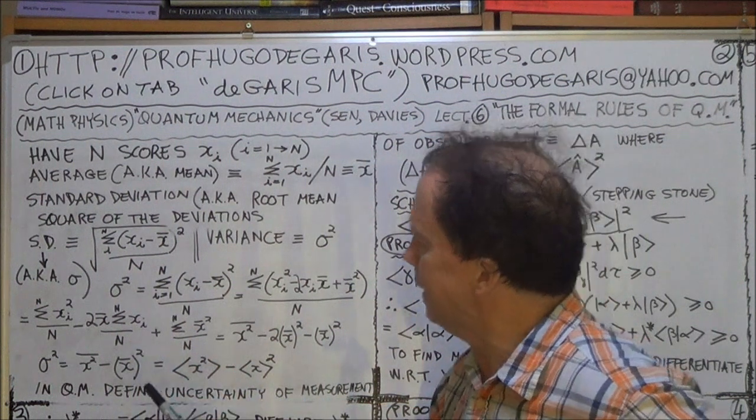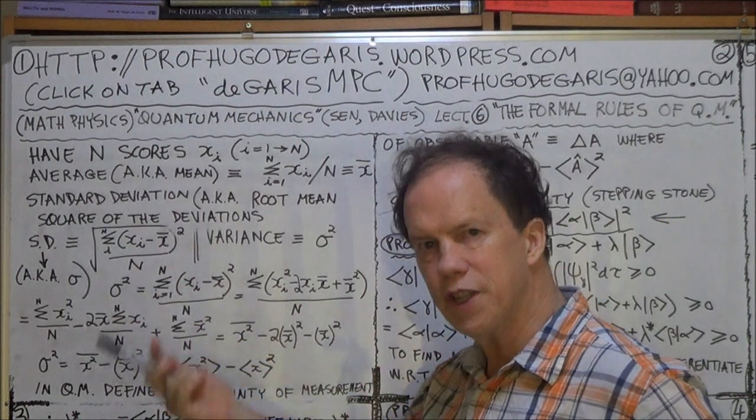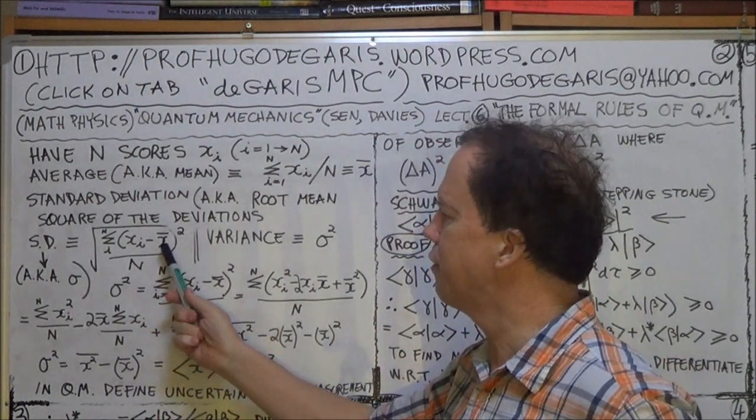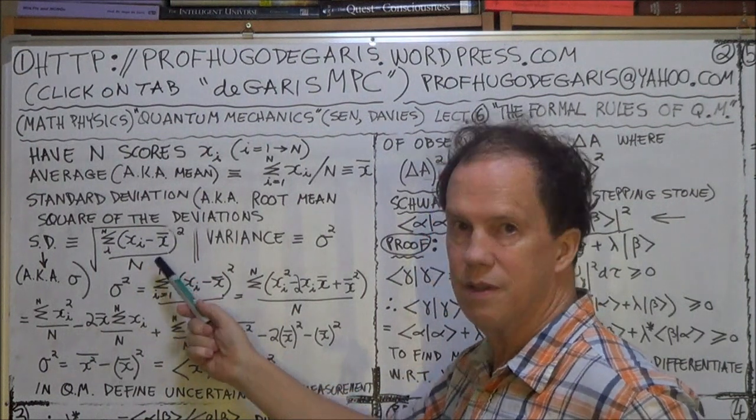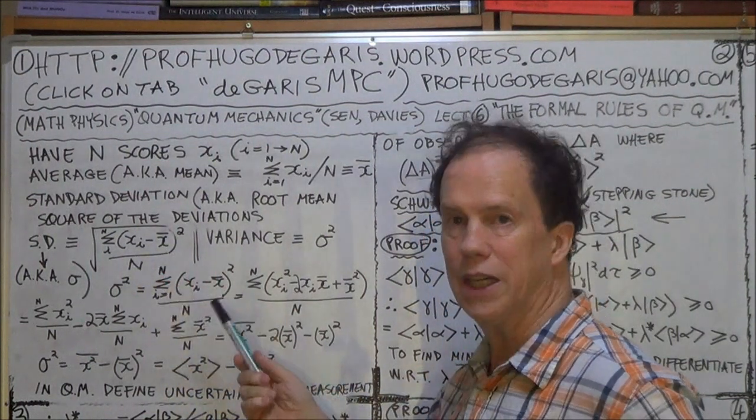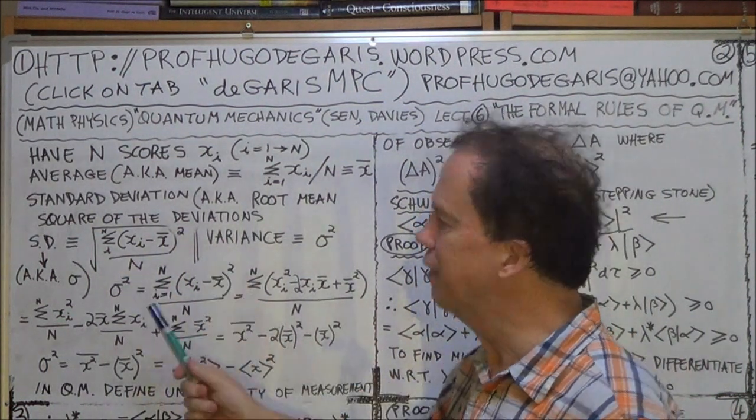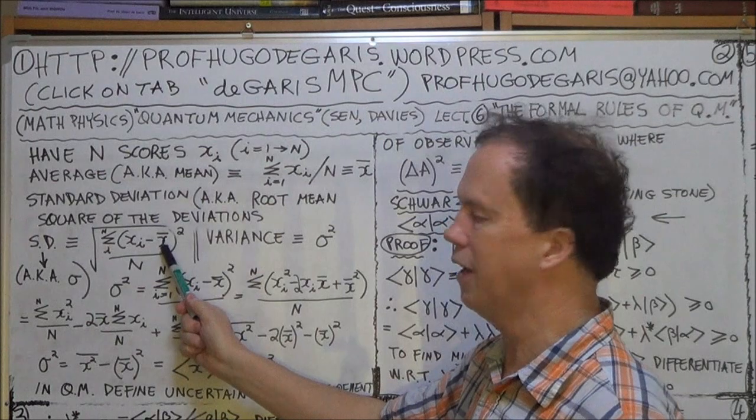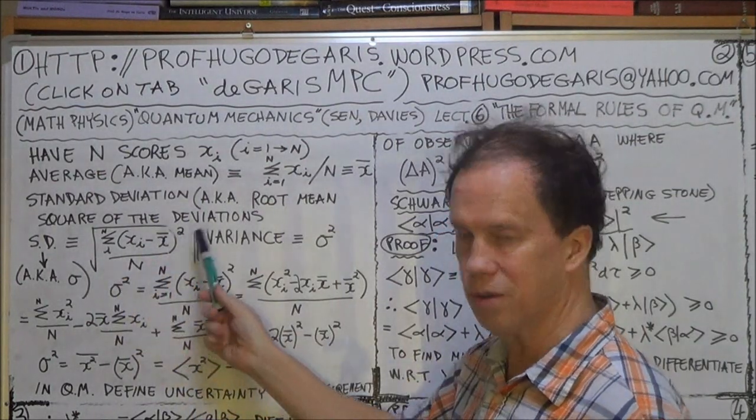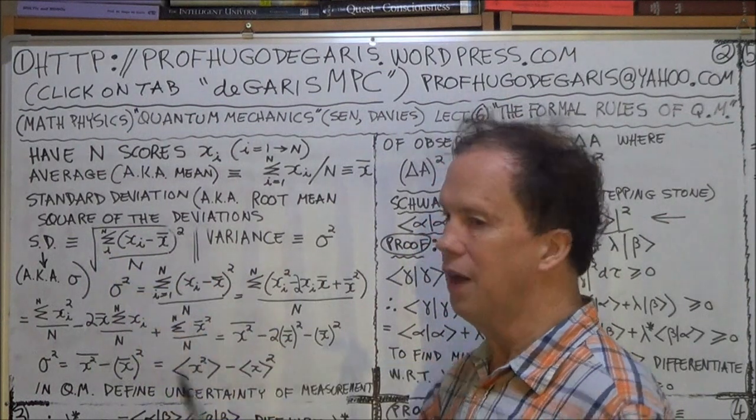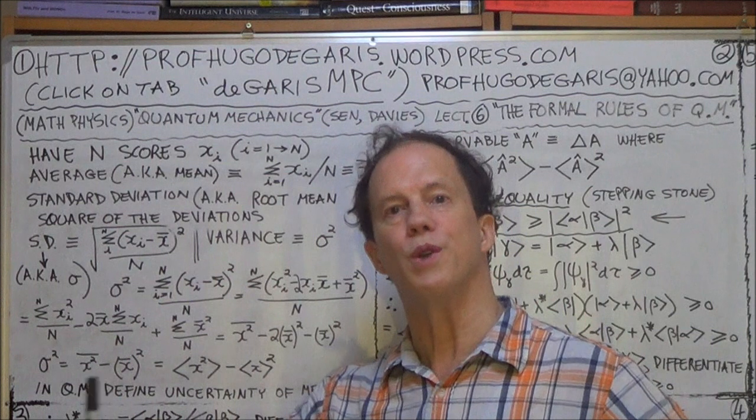So if your scores are very spread out around the average value, around the mean, well, that means these differences, these deviations, become large. The more spread out it is, the more different this score is compared to the average, to the mean. So this statistic, as it's called, this value, is a way to measure how spread out your scores are.